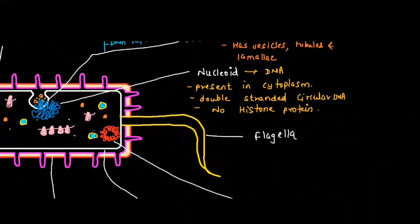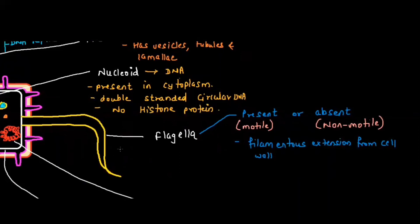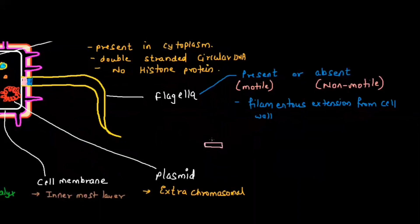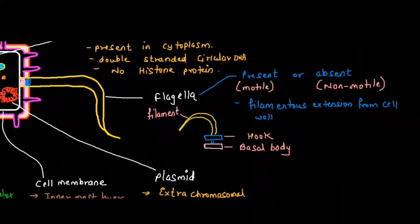This long hair-like structure is called flagella. Flagella is meant for locomotion. Whenever you talk about flagella, it is present in bacterial cells or it can be absent. If it is present, bacteria will be motile. If it is absent, bacteria will be non-motile. Whenever we talk about flagella, remember it is a filamentous extension from the cell wall. At the base, you find two plates: the first one is the basal body, above that is a hook, and finally the flagella which is known as the filament.